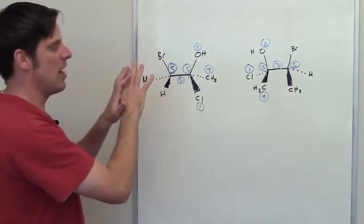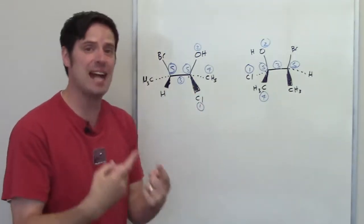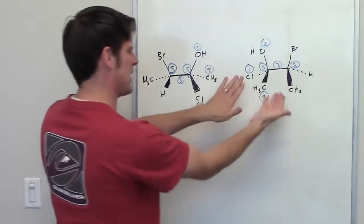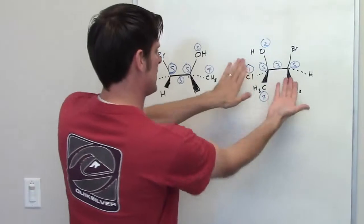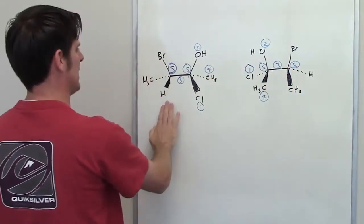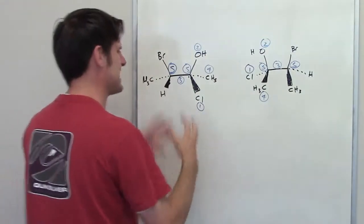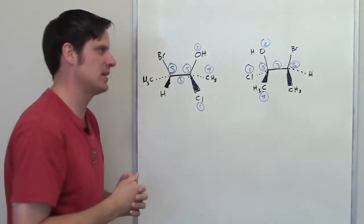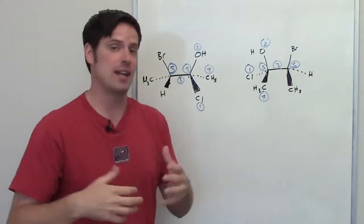They otherwise look exactly the same, which means they are the exact same molecule. If you don't believe me, you can actually imagine flipping it upside down like a pancake — scooping your hand underneath it, flipping it over, and laying it on the board. Each of these individual groups would be pointing in the same three-dimensional direction as the corresponding groups on the molecule to the left. So these are indeed the same molecules just drawn in slightly different ways.